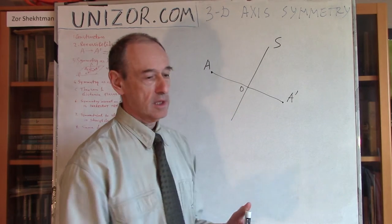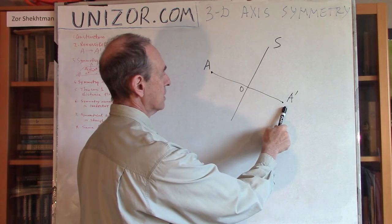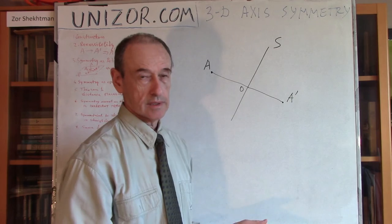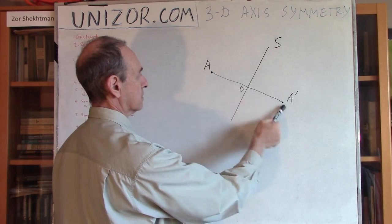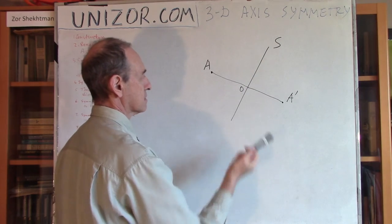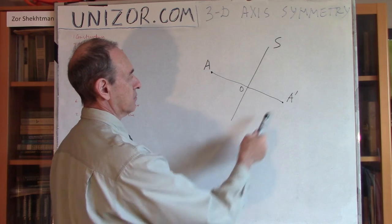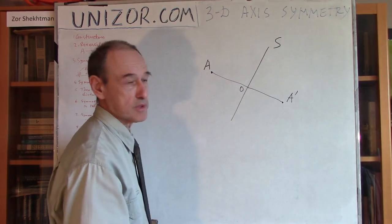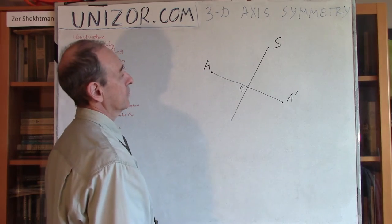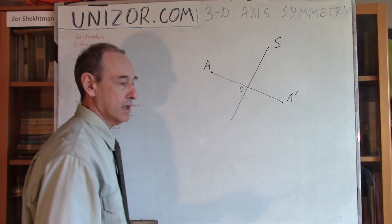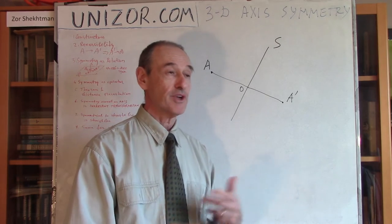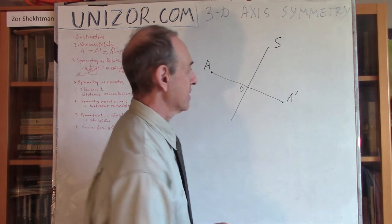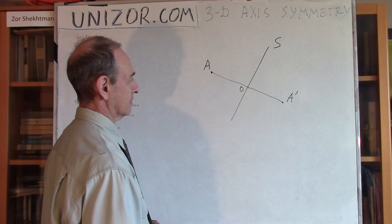The first thing that is easy to prove: if A' is symmetrical to A relative to axis S, then A is symmetrical to A' relative to the same line S. If we connect these points with a straight line, it will intersect our axis. Since AO is perpendicular to S, OA' — being a continuation — is also perpendicular. The same line serves in both cases, and the same distance applies in both directions. That is why symmetry is symmetrical: as A relates to A', A' relates to A.